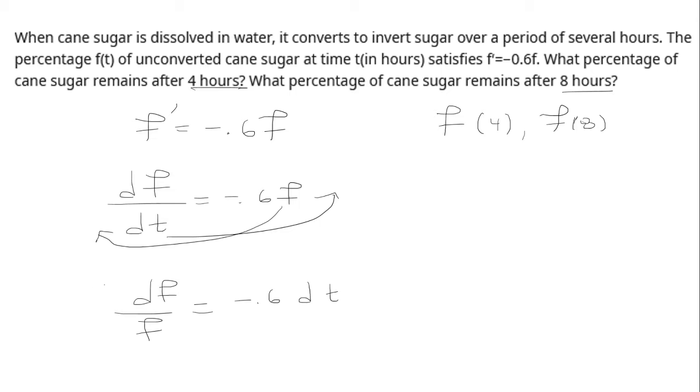We'll integrate both sides. So that's just going to be natural log absolute value of f equals negative 0.6t plus some constant c.